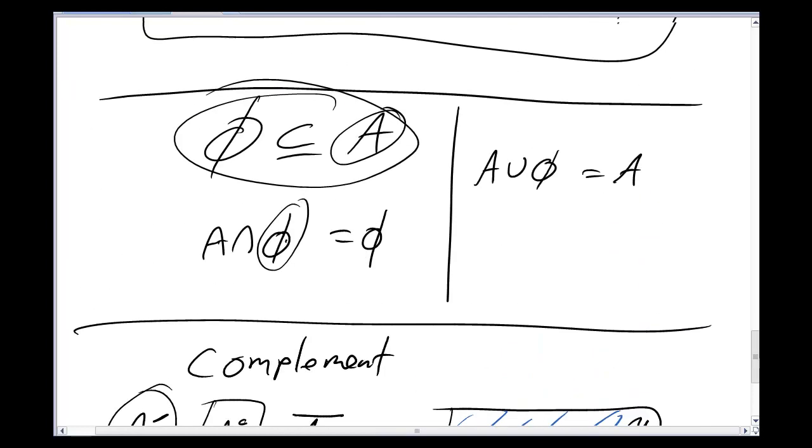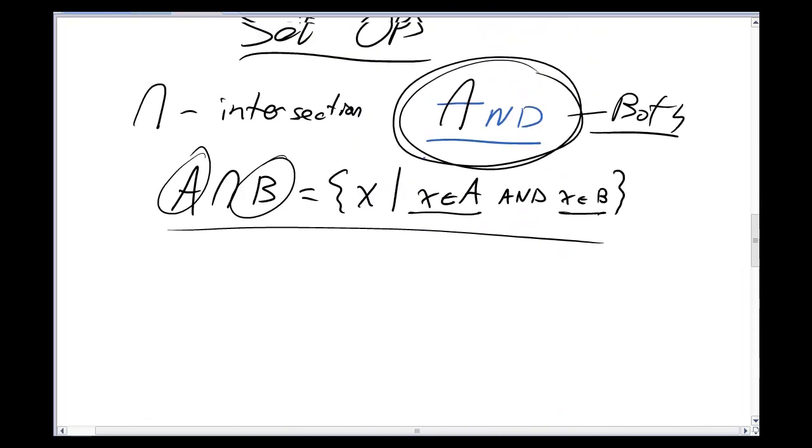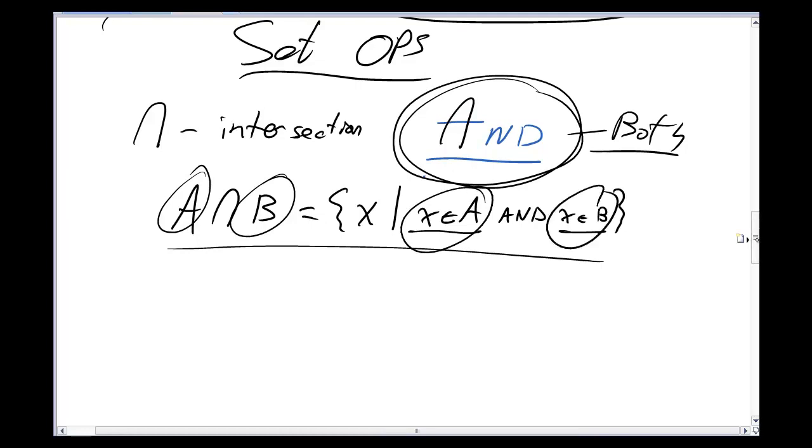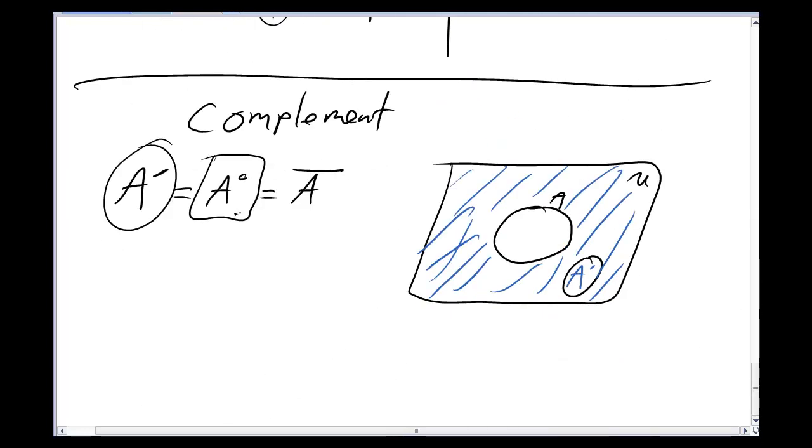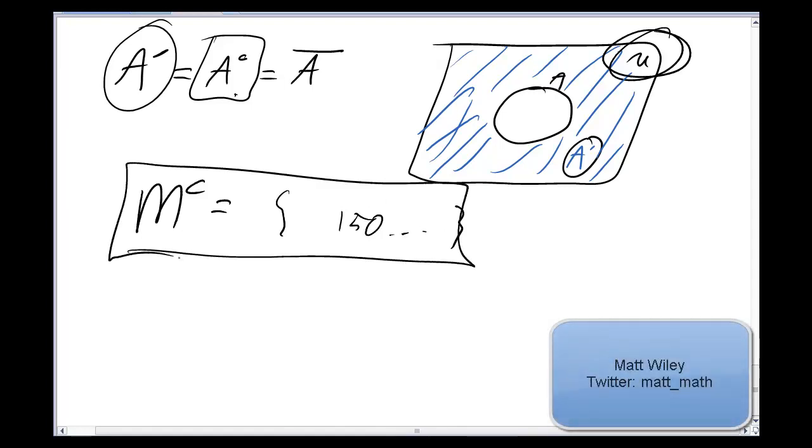To understand intersection, I also just needed two sets. I never needed to talk about the universe. To understand complement, though, I need to have a very good understanding of what's in my universe. The complement of all the VC math faculty would be a very long list indeed. If I was talking about the universe of all humans on the planet, it would be some 8 billion people almost. But if I understand my universe to only be the 2011 VC faculty, it's still a long list, but it's only about 150 people that I have to list out, which is much more manageable than just all the people who aren't in the math department.